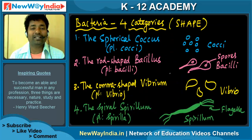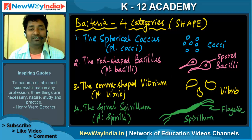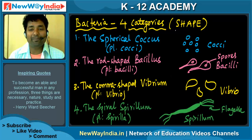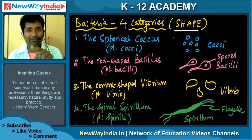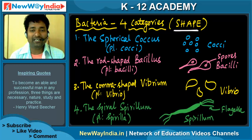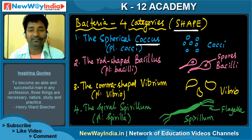Bacteria are categorized based on their shape — either circular, comma-shaped, rod-like, or spiral. If they are spherical, that is called Coccus, plural Cocci. You draw them like a circle.